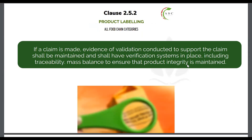For product labeling: if you make any claims about your product — plant-based, gluten-free, organic, halal, or kosher — you must have a validation of that claim and verification systems to support it, including traceability and mass balance to ensure product integrity is maintained. Remember: validation is the initial proof that the claim is accurate; verification is checking on an ongoing basis that you're still complying with what was established in the validation study. Never confuse the two.